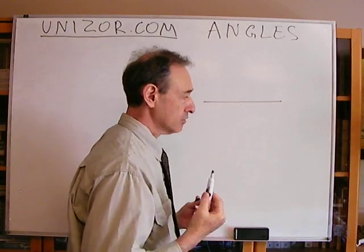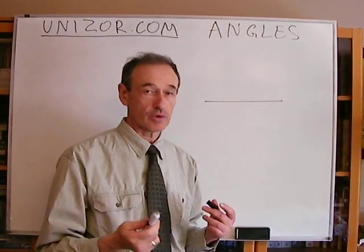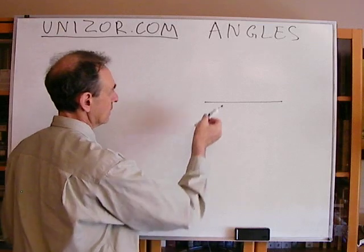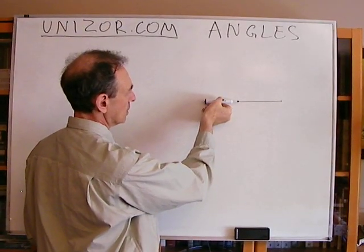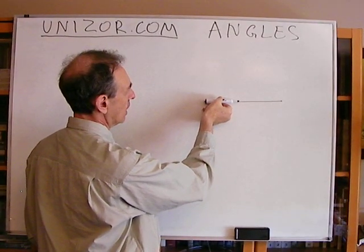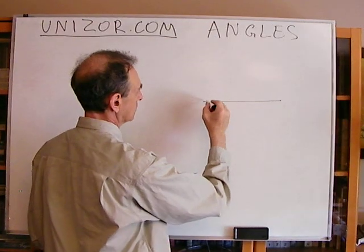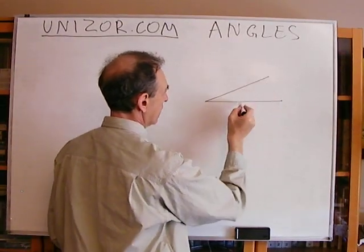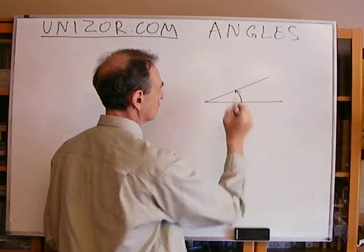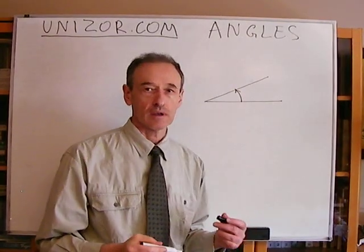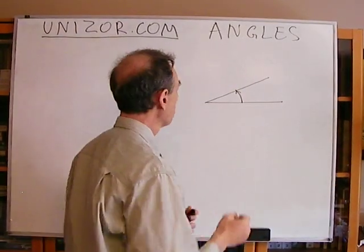The unit of measurement is a degree, and now we will start rotating one of these two rays counterclockwise. And this will be the positive direction of increasing the value of an angle.